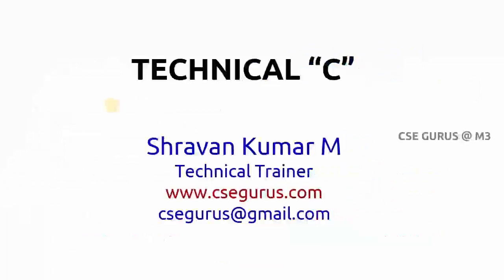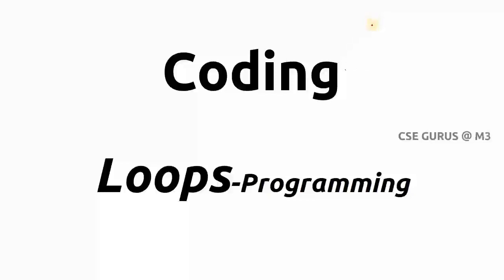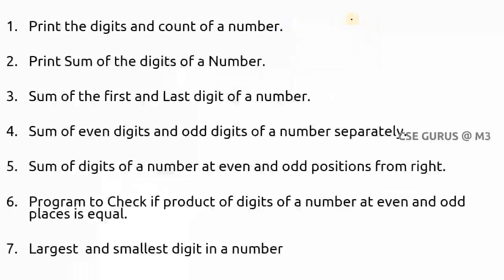Welcome to the video lectures on Technical C by Shravan Kumar Mantri. We'll see questions one by one with execution and output. The first question is printing the digits and count of a number. For example, if n equals 523, the digits are 5, 2, and 3. We want to print those digits.